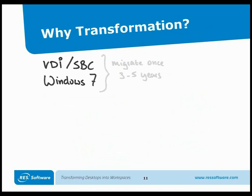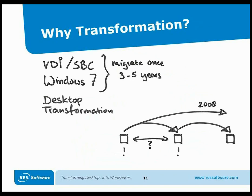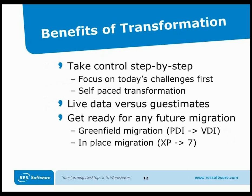With VDI, server computing, or Windows 7 migrations, you can only do this once every three to five years. Desktop Transformation lets you apply this anytime to a live desktop environment without impacting users — a safe way forward to move from device-centric management to user-centric or context-aware management of workspaces. Benefits of transformation: take control step by step, focus on today's challenges, self-paced transformation using live data versus guesstimates, and get ready for any future migration — whether greenfield from physical to virtual or in-place from Windows XP to Windows 7.